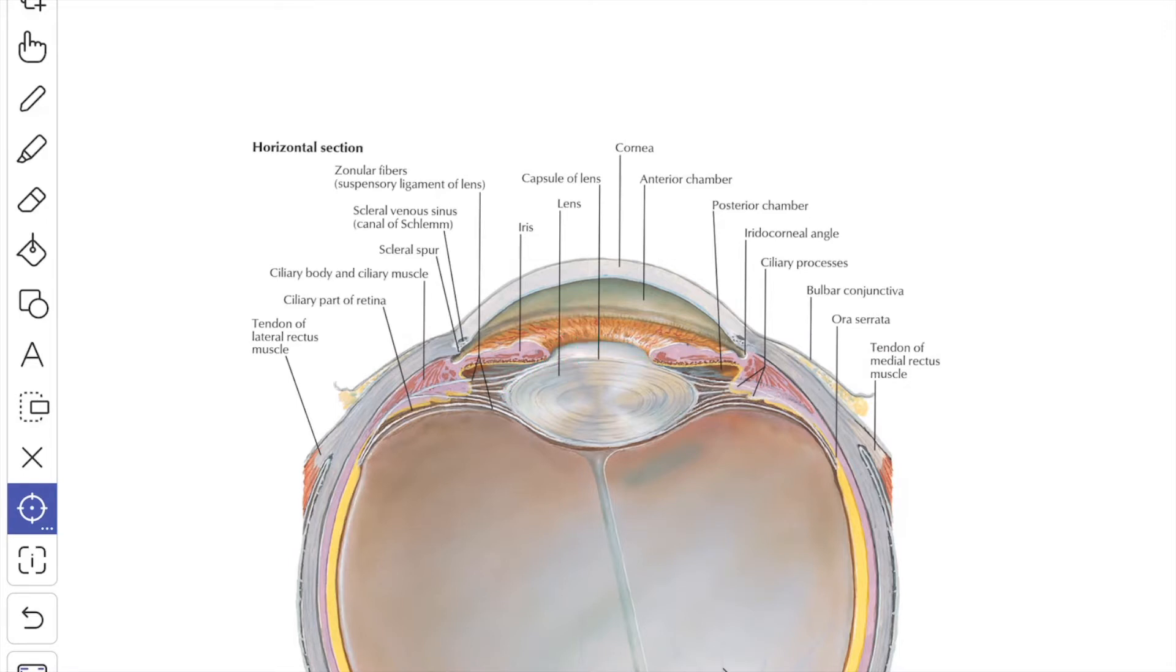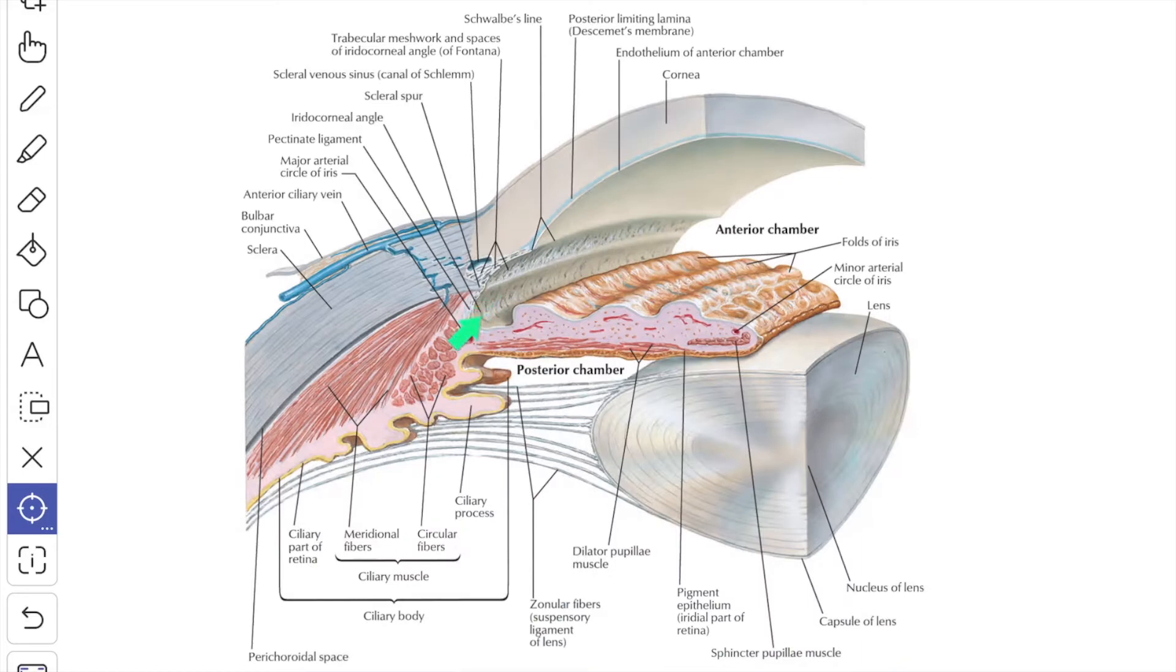Since the pupil is closely applied to the anterior surface of the lens, it permits the fluid to flow from the posterior to anterior chamber but not in the reverse direction. On reaching the iridio-corneal angle, the fluid passes through the endothelial line spaces of the trabecular meshwork known as the spaces of Fontana.